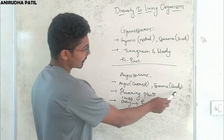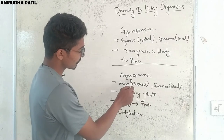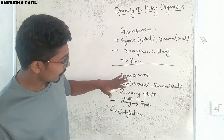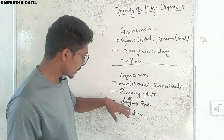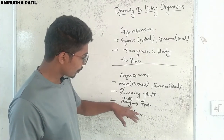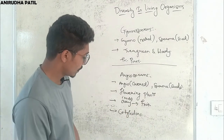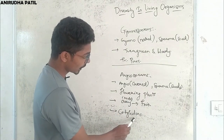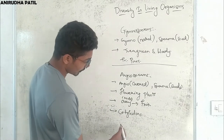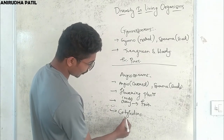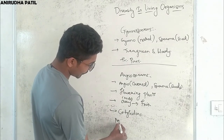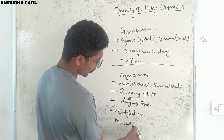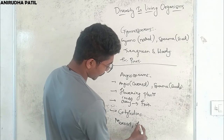Similarly, angio means covered and sperm means seeds, so angiosperms have covered seeds. Most angiosperms are flowering plants, and seeds are derived from the ovary, which turns into fruits. Further, based on cotyledons: if the seed contains a single cotyledon it is called a monocot, and if it contains two cotyledons it is called a dicot plant.